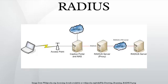AAA — RADIUS servers use the AAA concept to manage network access in the following two-step process, also known as an AAA transaction. AAA stands for authentication, authorization, and accounting. Authentication and authorization characteristics in RADIUS are described in RFC 2865, while accounting is described by RFC 2866.